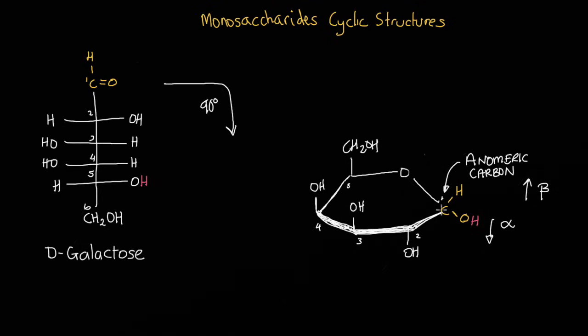In the Fischer projection, it's quite easy to see how many chiral carbons we have, because each of these intersections represents a chiral carbon. So we've got one, two, three, four. So it's got four chiral carbons. Whereas this now has five. So again, it's D-galactose and it's got five chiral carbons.